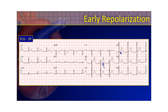We see the ST elevation in these precordial leads, and it's all concave, which is usually not bad. You can identify that it's concave by drawing that straight line from the J-point to the top of the T-wave — sure enough, the ST segment is below that. Looking further, you see the pattern over here in the inferior leads as well — that same concave ST elevation. You might also be able to identify a little bit of notching of that J-point. And all that is because it's early repolarization.